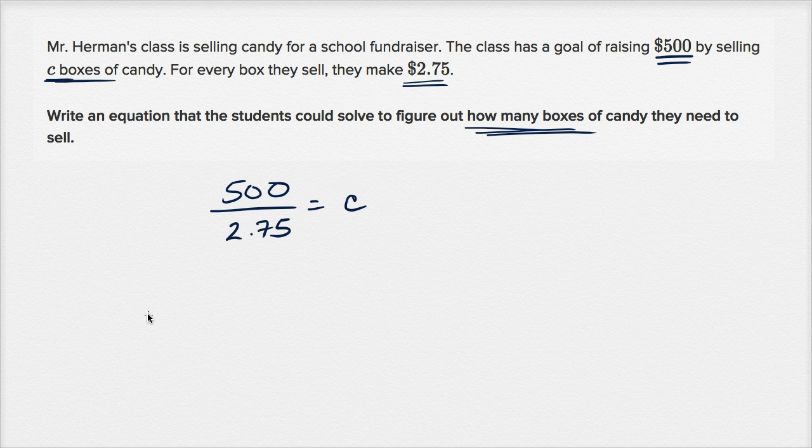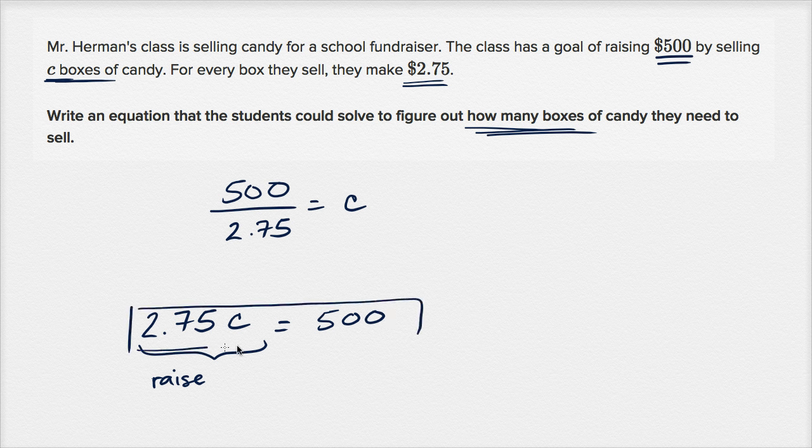Another way you could think about it: $2.75 per box times C boxes, this is the total amount of money they will raise. This is the amount, so this is the amount that they will raise, and their goal is to raise $500. So they want this to be equal to $500. So this also could be an equation that the students could solve to figure out how many boxes of candy they need to sell.